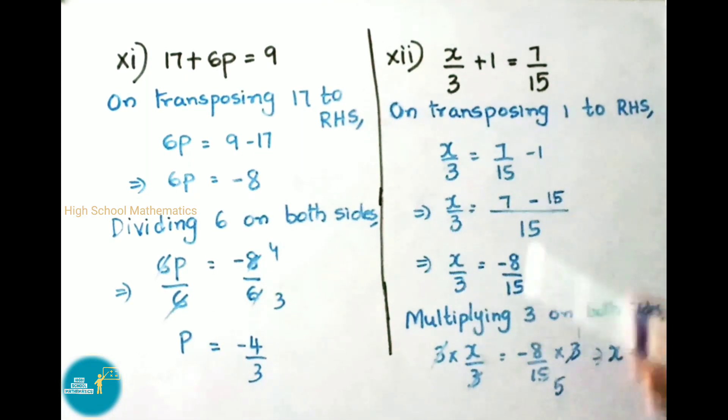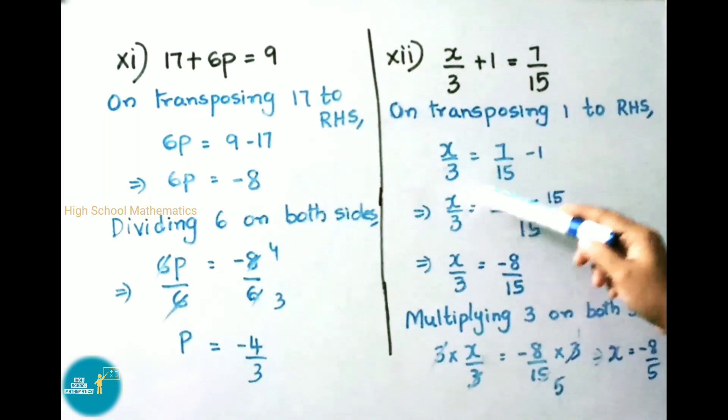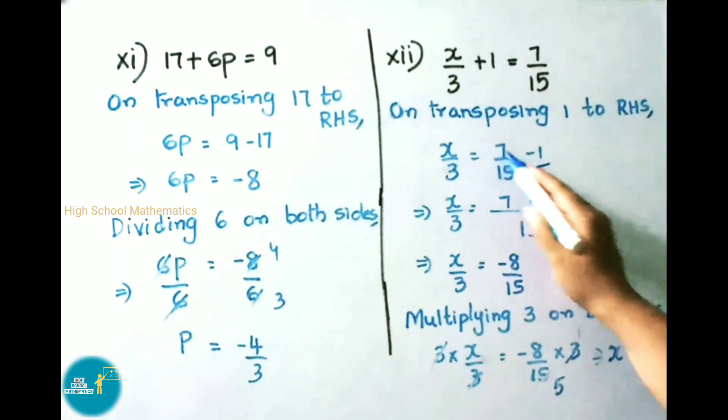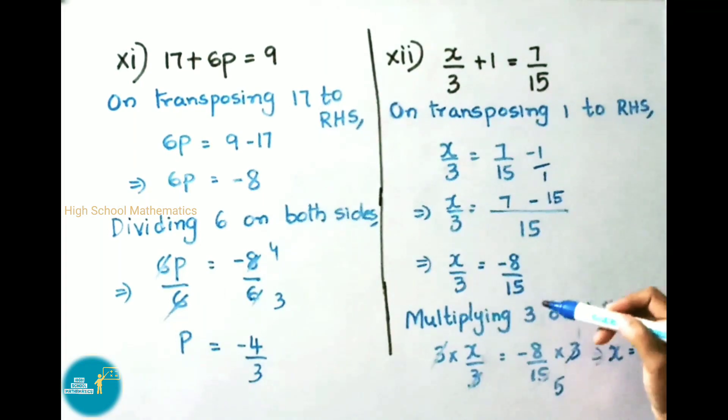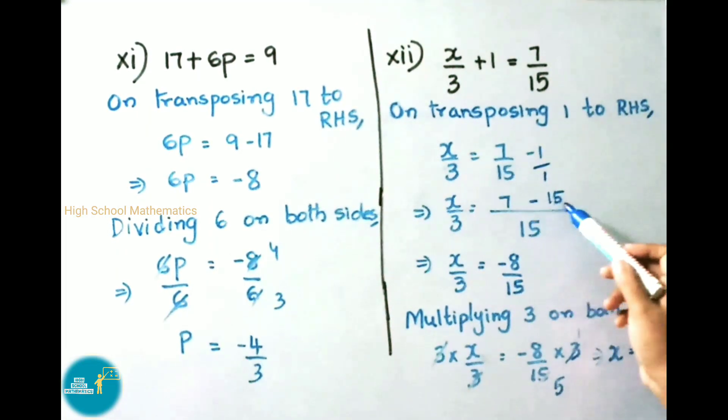Now 12th sum: x/3 + 1 = 7/15. On transposing 1 to RHS, x/3 = 7/15. Plus 1 becomes minus 1. x/3 = 7/15 - 1. Here 1, below it 1 is present. LCM of 15 and 1 is 15. Cross multiply: 7 × 1 = 7, minus 15 × 1 = 15, over 15. That implies x/3 = (7 - 15)/15. x/3 = -8/15.